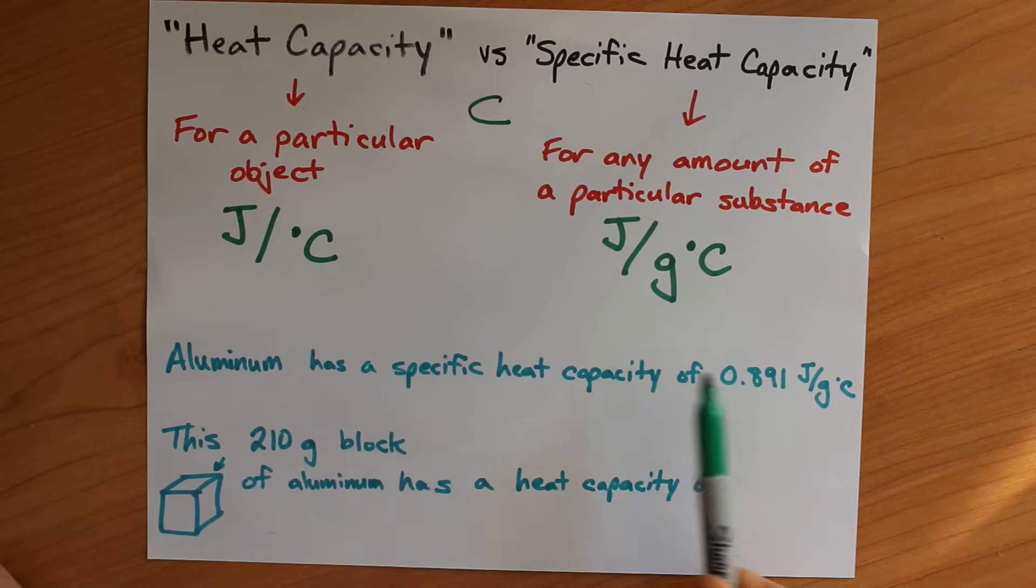Aluminum has a specific heat capacity of 0.891. That's just a true fact that I looked up online. But this block here, this is a 210 gram block of aluminum.